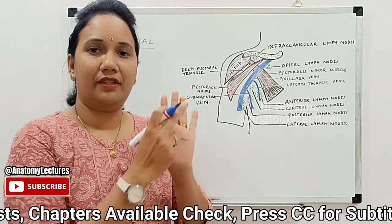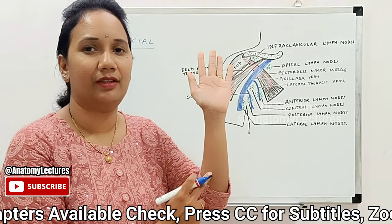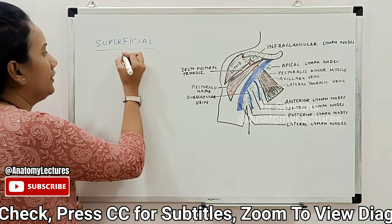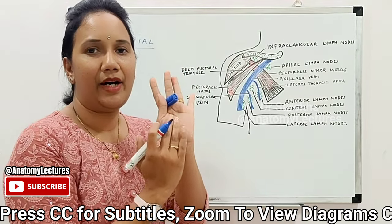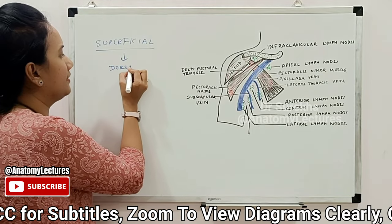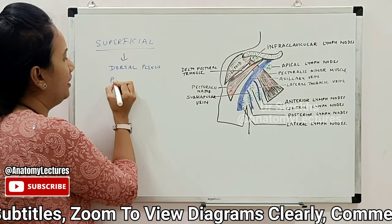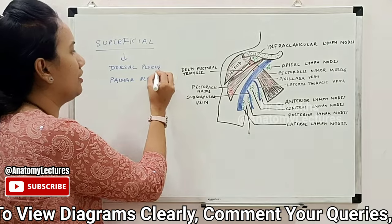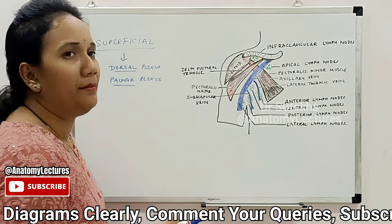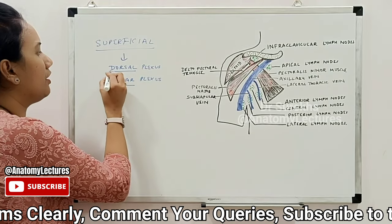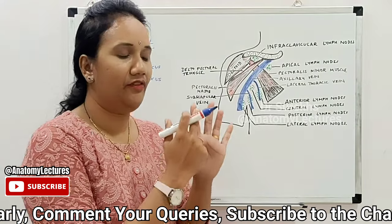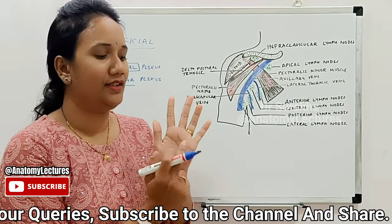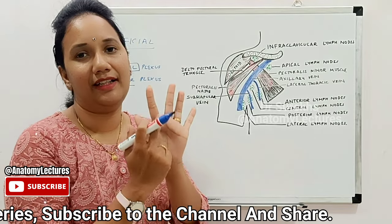We will start the description from the hand, then forearm, and then the arm. In the hand, there are two different plexuses: a dorsal plexus on the dorsum of the hand and a palmar plexus on the palmar aspect. The dorsal plexus will receive lymph from the digits, and from the palm, lymphatics pass to the dorsal side through communication at the webs of the fingers.